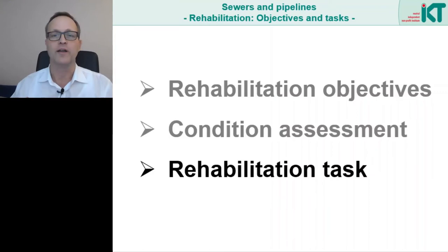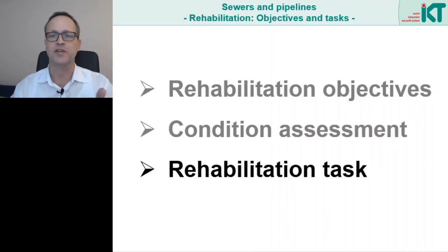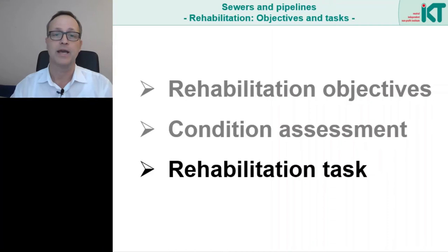That brings us to the third point in our seminar session: the rehabilitation task. After rehabilitation, the same requirements are set for sewers and pipes as for a new sewer — they must be operationally safe, stable and watertight. When assessing damage, we must always ask ourselves what influence damage has on these three criteria. Only when we know this do we know what the concrete rehabilitation task is, and thus which rehabilitation method might come into question. Do we need a method that improves stability, or one that seals the pipeline section, or do we need to improve the flow to re-establish hydraulic capacity?